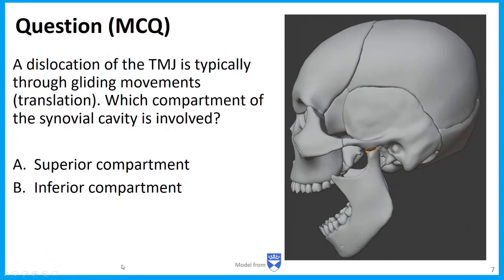Our question is: a dislocation of the TMJ is typically through the gliding or translational movements — so which compartment of the synovial cavity is involved in these movements? Take a moment to choose your answer. When we're talking about the gliding motions, that is our superior compartment. So the answer is A — the superior compartment — where protraction moves the condyle forward, and retraction brings it back into the mandibular fossa with closing of the mouth. The inferior compartment is where the hinge joint movements — elevation and depression — take place.